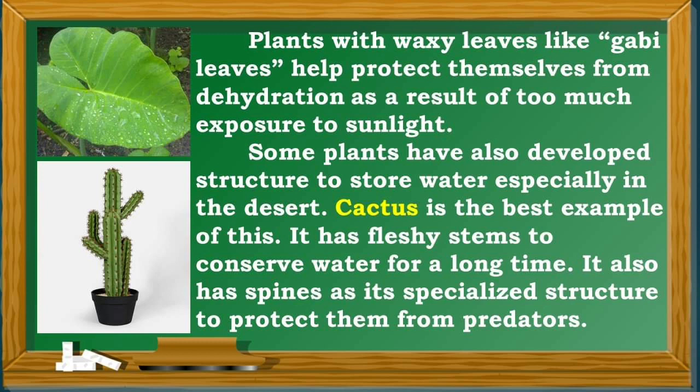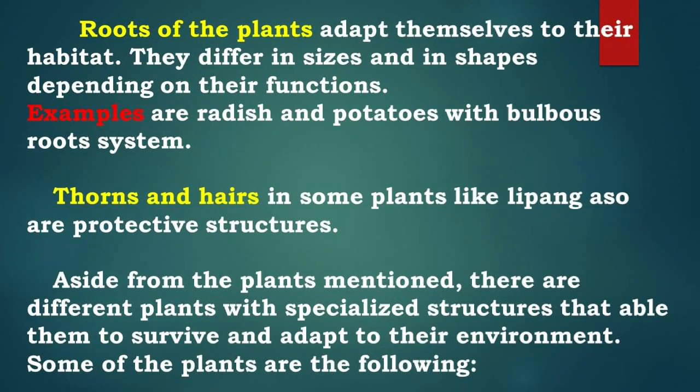Some plants have also developed a structure to store water, especially in the desert. Cactus is the best example of this. It has fleshy stems to conserve water for a long time. It also has spines as its specialist structure to protect them from predators. Roots of the plants adapt themselves to their habitat.